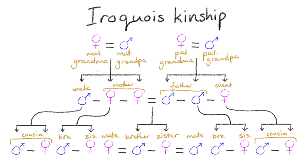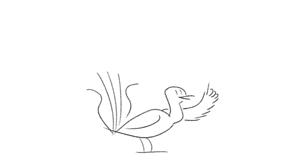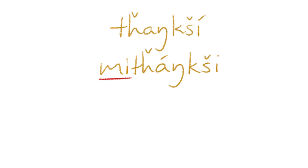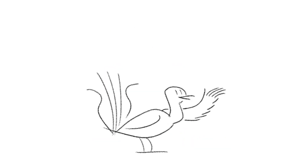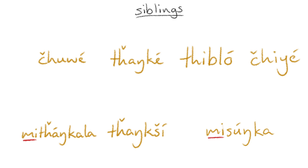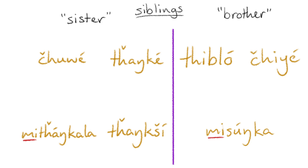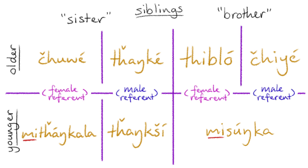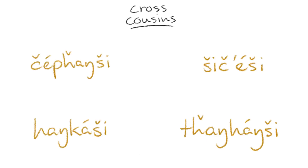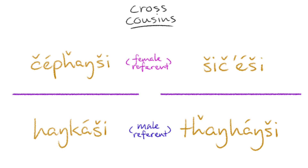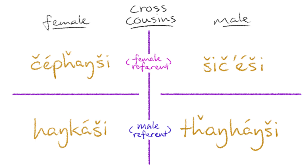Kinship. Lakota kinship largely follows an Iroquois kinship system when mapped out on a family tree, and terms for family members are also inflected with possessive forms — i.e., my sister, your sister, his or her sister, etc. — with the first-person form often being used as the term of address. Terms for siblings distinguish between whether the sibling in question is male or female, whether they are older or younger than the speaker, as well as whether the speaker is male or female. Parallel cousins are also regarded as siblings, whereas cross cousins have their own distinct terms which also distinguish between the gender of both the speaker and the cousin in question, but not their relative ages.